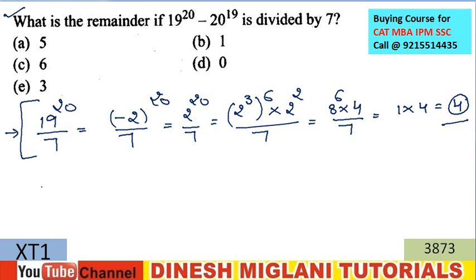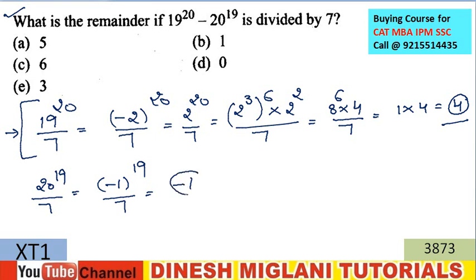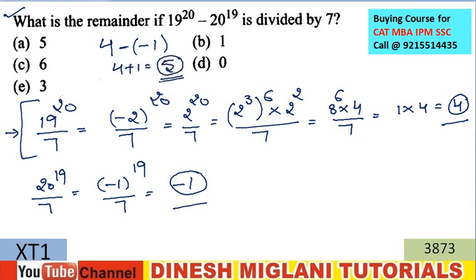Now I find 20^19 divided by 7. Again, 7 × 3 = 21, so 20 ≡ -1 (mod 7). Therefore (-1)^19 divided by 7 gives remainder -1. Combining: the remainder of 19^20 divided by 7 is 4, and the remainder of 20^19 divided by 7 is -1. So the overall remainder is 4 + 1 = 5. The answer is A.